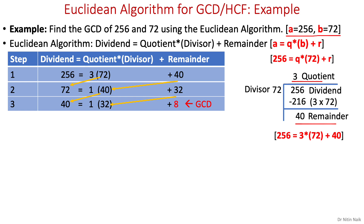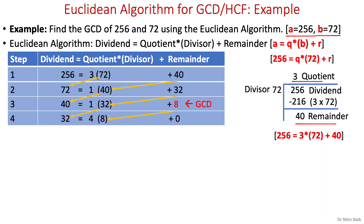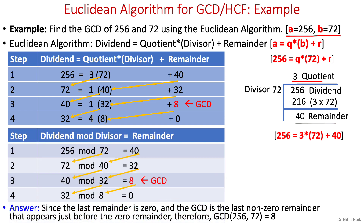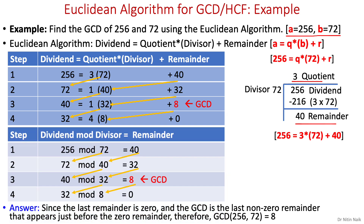After continuing the division process, since the last remainder is zero, the GCD is the last non-zero remainder that appears just before the zero remainder. Therefore GCD of 256 and 72 is 8. Also, as this whole computation is based on the mod, we can write this table just using the mod relation and ignore the quotient.